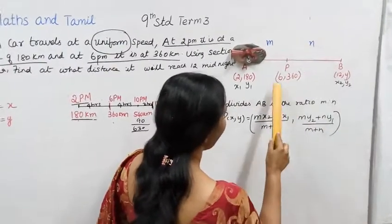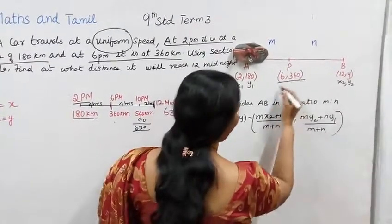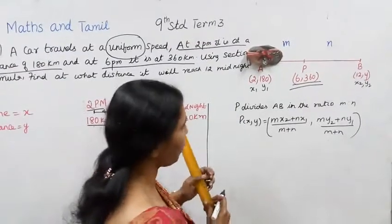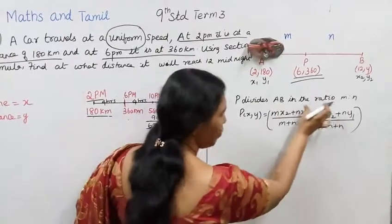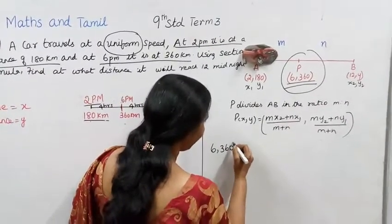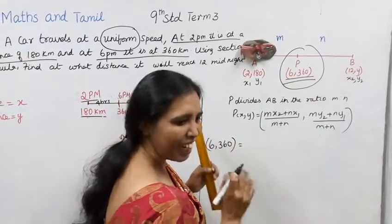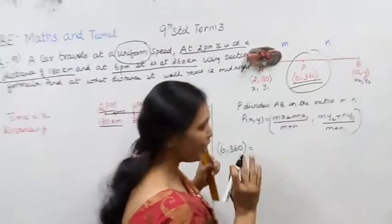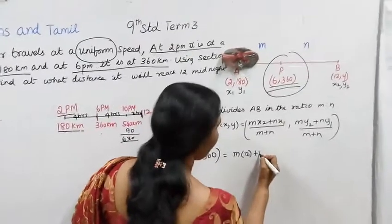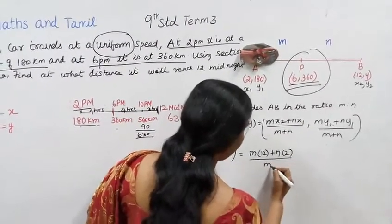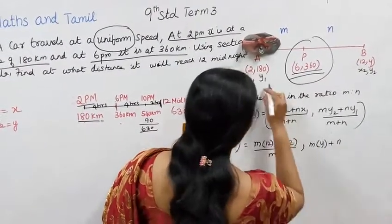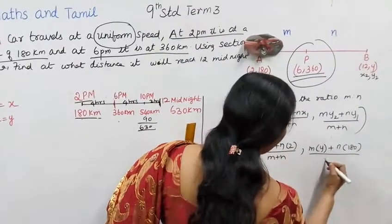Point P divides AB in the ratio m:n. We need to find the ratio. At 6pm, 360 km. Using section formula: P(x,y) = (mx2 + nx1)/(m+n), (my2 + ny1)/(m+n). So 6,360 equals (12m + 2n)/(m+n), (my + 180n)/(m+n).